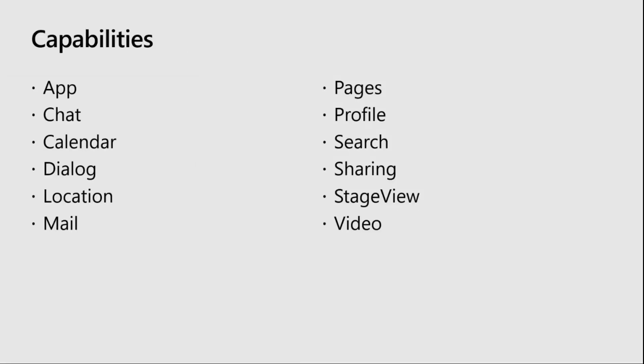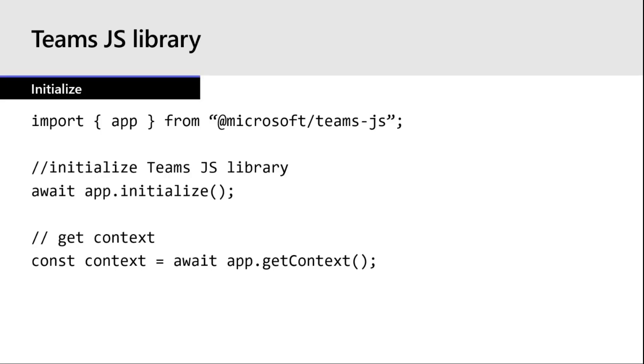The Teams JavaScript Client Library has a number of APIs grouped into what are called capabilities. These capabilities provide access to different types of functionality within Teams — things like chat, calendar, dialogues, profiles, and search. The first capability you'll start with is the app capability, because you have to initialize the library before you can use it. To do so, you import the app namespace and then initialize the library by calling the initialize function, which returns a JavaScript promise so you can use async/await.